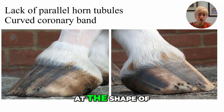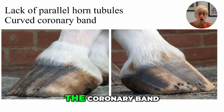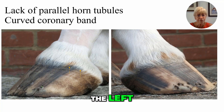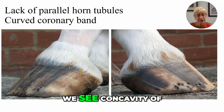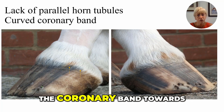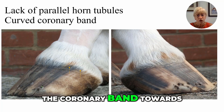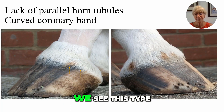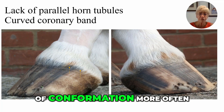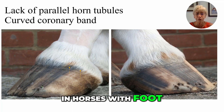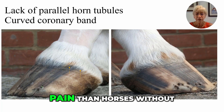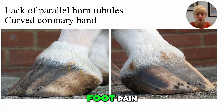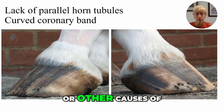We need to look at the shape of the coronary band. In the horse on the left, we see concavity of the coronary band towards its palmar one-half. We see this type of conformation more often in horses with foot pain than in horses without foot pain or other causes of forelimb lameness.